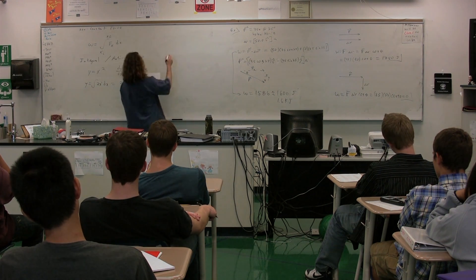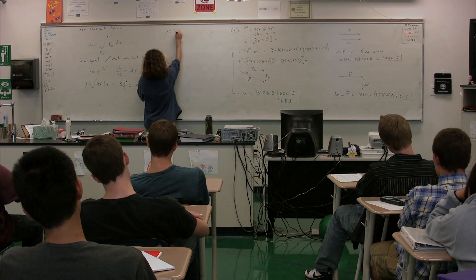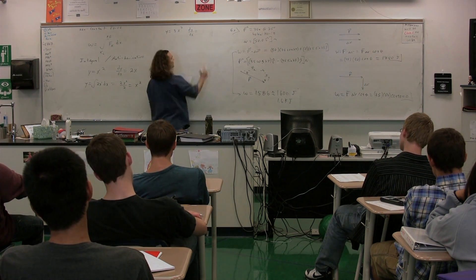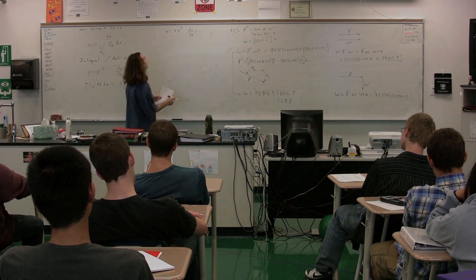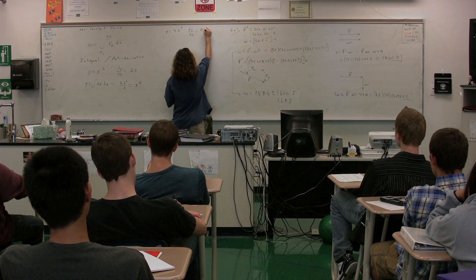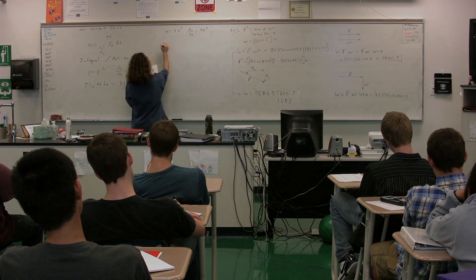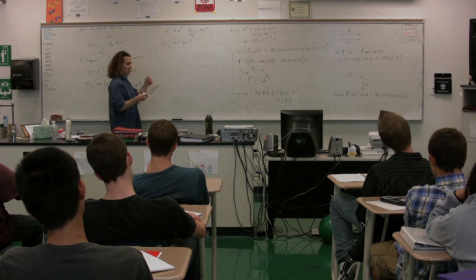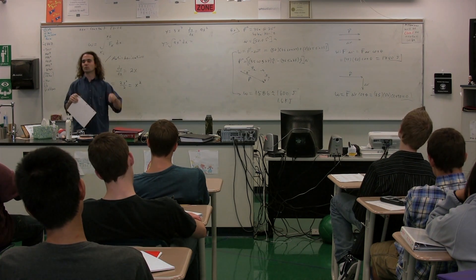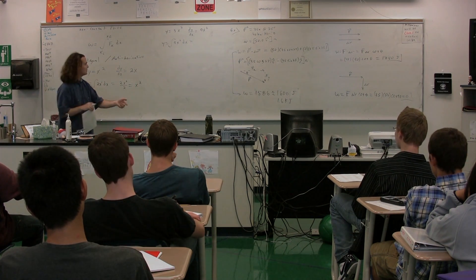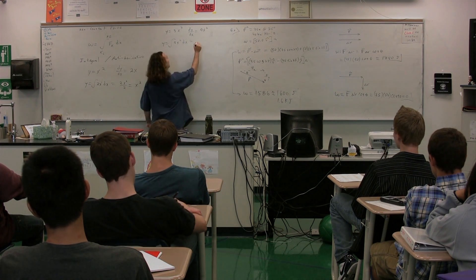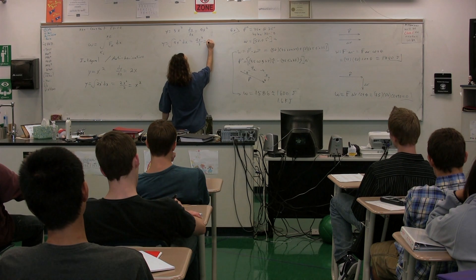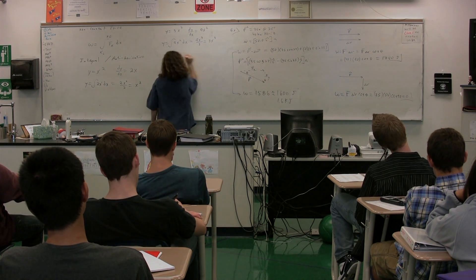Let's do another one. If y equals 3x cubed, then dy/dx equals what, Sarah Jane? 9x squared. 9x squared. Therefore, if y equals the integral of 9x squared with respect to x, then that is equal to what, Nittish? 9x cubed over 3, which is equal to 3x cubed. Good.